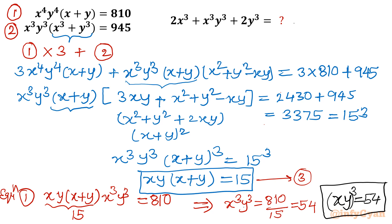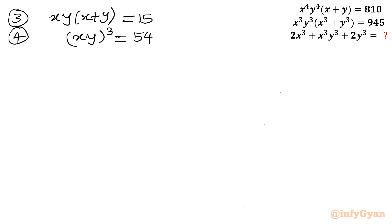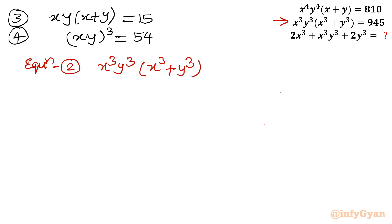Let me write both key equations together: Equation 3 — xy(x + y) = 15; and Equation 4 — (xy)³ = 54. Now using Equation 2: x³y³(x³ + y³) = 945. From Equation 4, x³y³ = 54, so I write 54(x³ + y³) = 945.